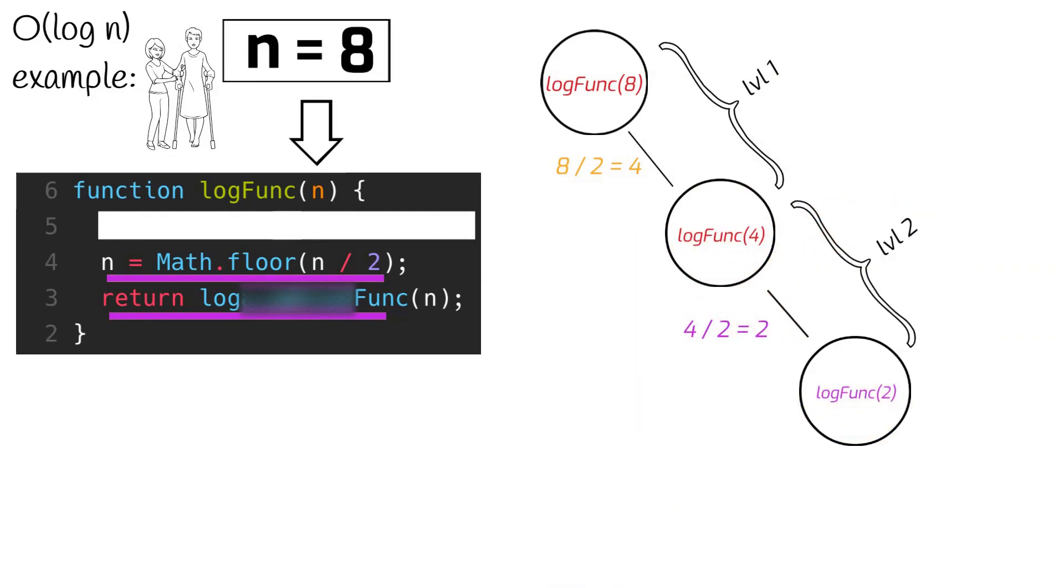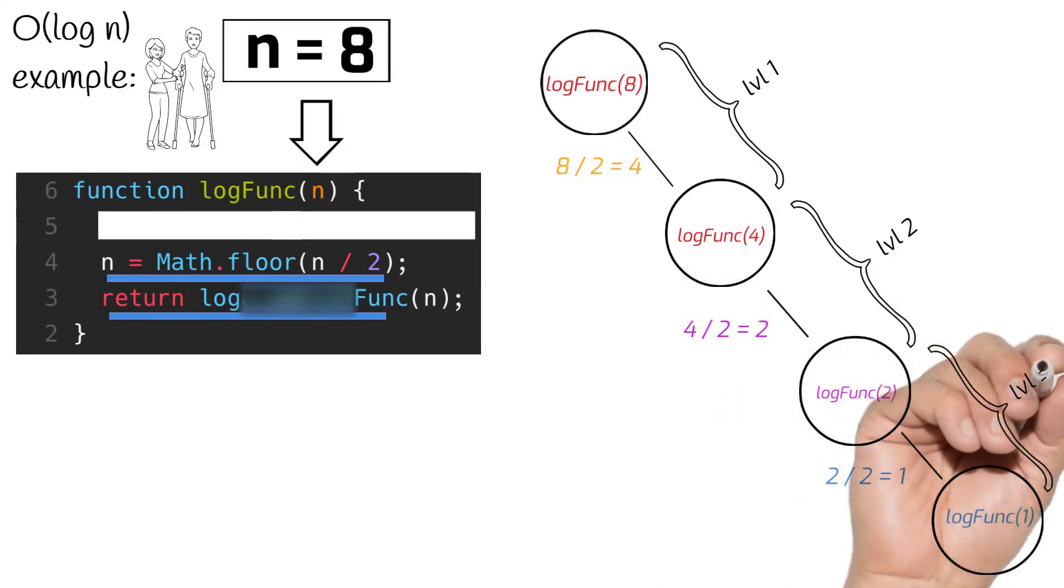We then do the same thing with our most recent value for n, which is 2. We divide it by 2, and the function once again recursively calls itself. At this level, we will stop as we can no longer divide n without getting fractions as the result.